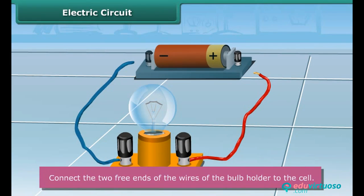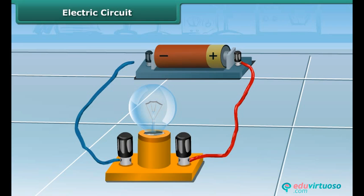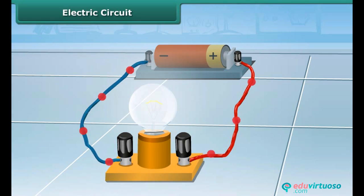Connect the free end of one wire to the positive terminal of the cell and the free end of the other wire to the negative terminal of the cell. This may be done with the help of a rubber band or an adhesive tape. After the connection, you can see that the bulb lights up.